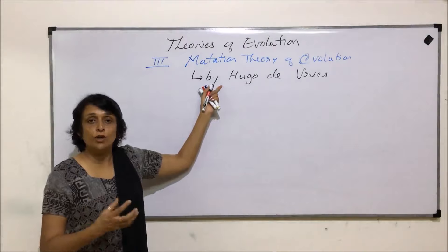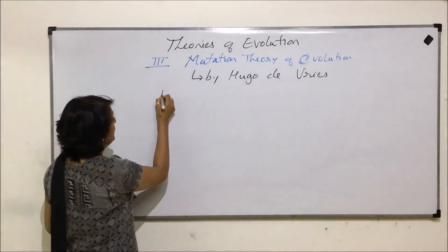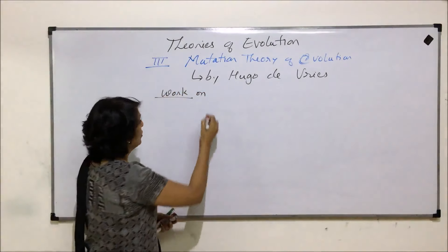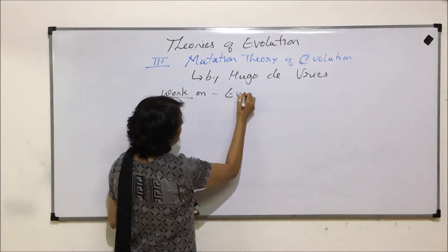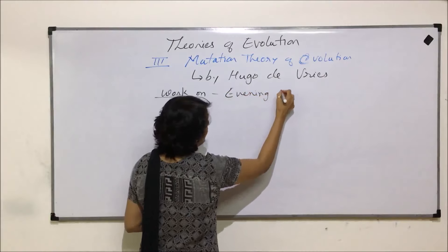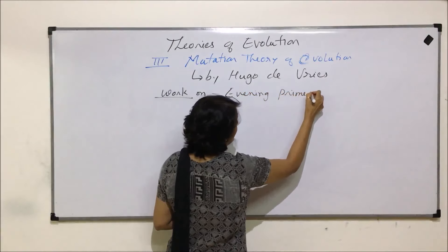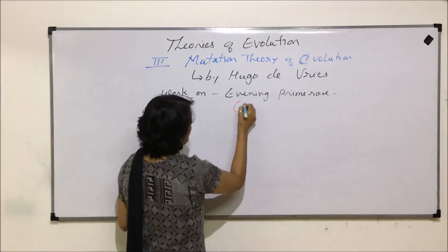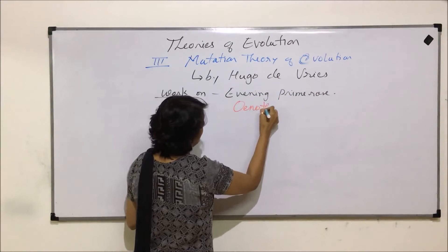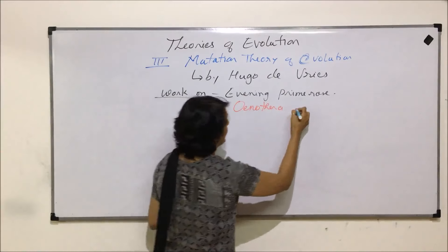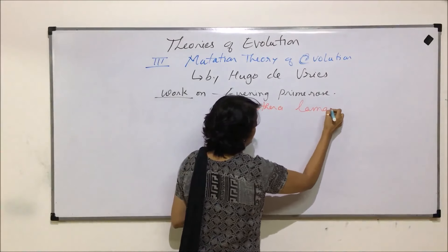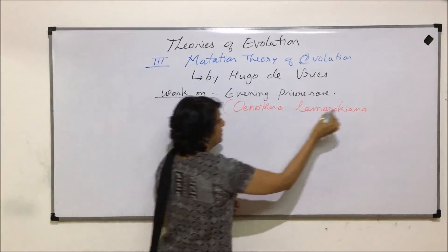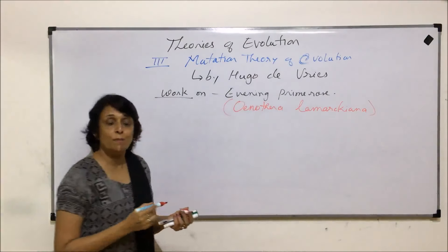Hugo de Vries' entire work was done on Evening Primrose, a plant whose scientific name is Oenothera lamarckiana.